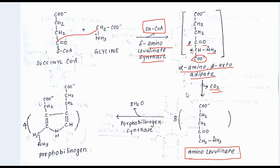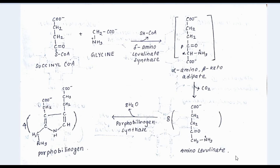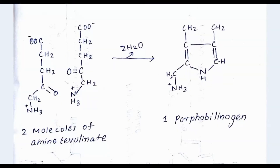Aminolevulinate (ALA) is then converted into porphobilinogen. This conversion is the rate-determining step of heme synthesis, and the enzyme that catalyzes this process is porphobilinogen synthase. An important point to remember is that two molecules of ALA are required to form one molecule of porphobilinogen.